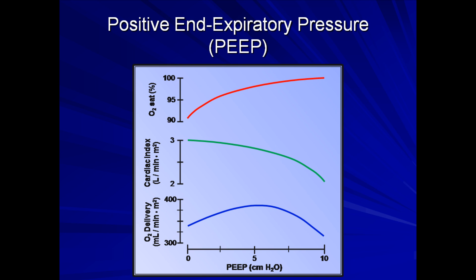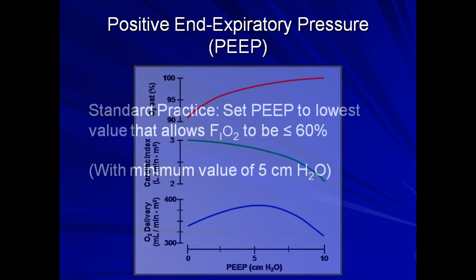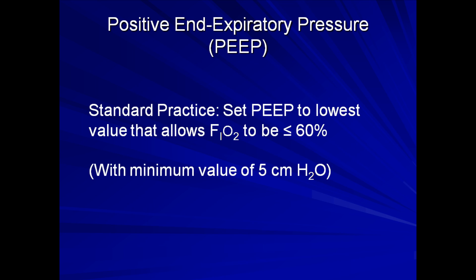In standard practice, however, clinicians don't usually set PEEP to maximize cardiac output, but rather set it to the lowest value that allows FiO2 to be equal to or less than 60%, with a minimum value of 5 cm of water. This practice is standard more because it's easy to do rather than because it's actually the best way to manage patients. Selection of optimal PEEP is discussed more in the next lecture, particularly in regards to management of ARDS.